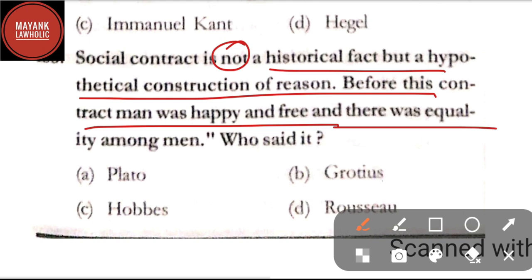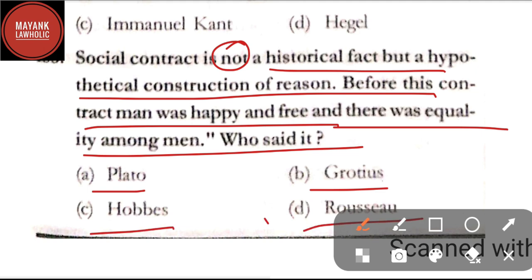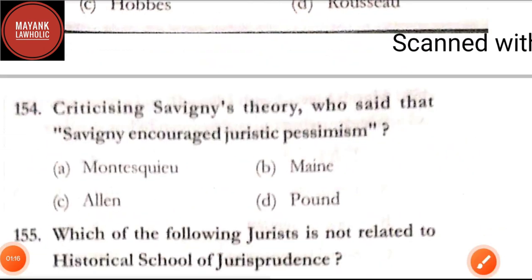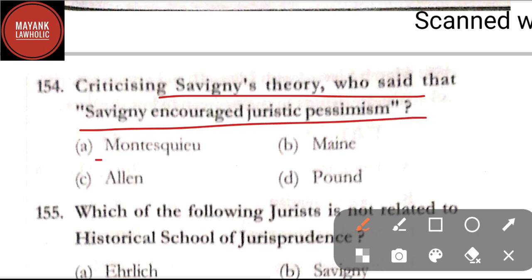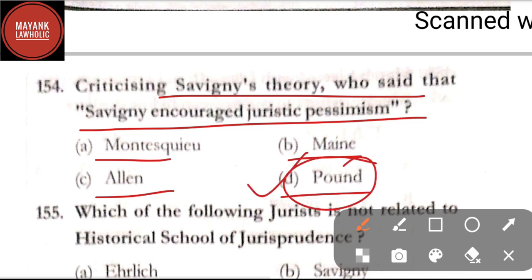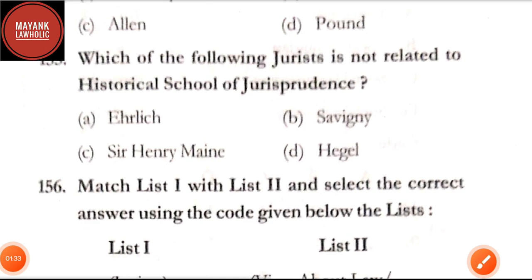Question number 153: 'Social contract is not a historical fact but a hypothetical construction of reason — but by this contract men were happy and free and there was equality among men' — who said it — option A: Plato; option B: Grotius; option C: Hobbes; option D: Rousseau. The correct answer is option D, Rousseau.